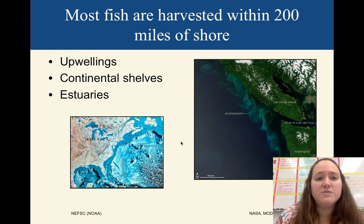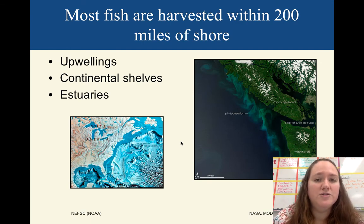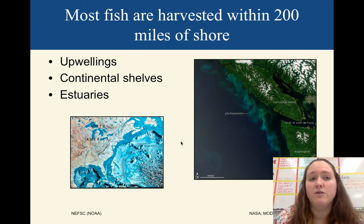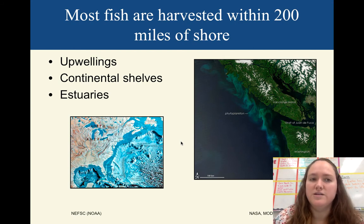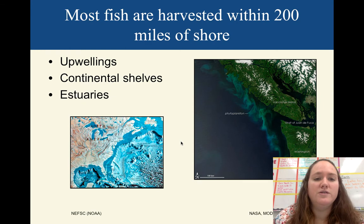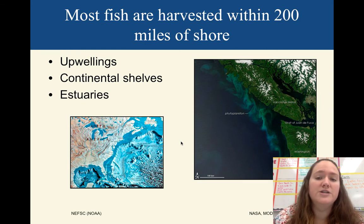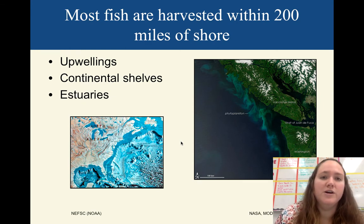Most fish, when we talk about harvesting, are harvested about 200 miles offshore. We usually don't go out into the deep ocean to get fish — if we do, we're using nets and things like that. But we do this along the continental shelf and in estuaries, places where we know fish are going to be very abundant.